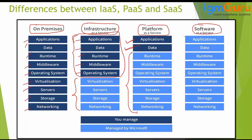Then we have Software as a Service. Here everything will be provided by the vendor itself — for example Sitecore — and we just need to log in and operate it. Examples include Office 365 or Gmail. Everything is available there and you don't need to install anything, upgrade anything, or take care of security or maintenance. Everything will be managed by the service provider; we just need to log in and do our day-to-day operations.